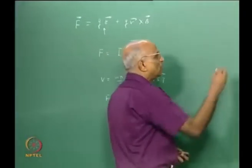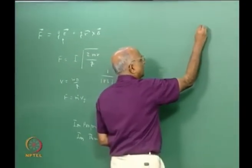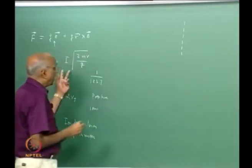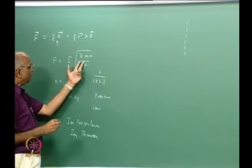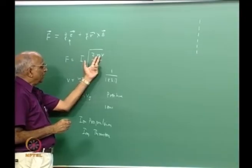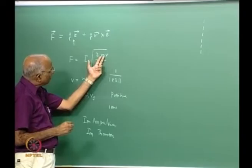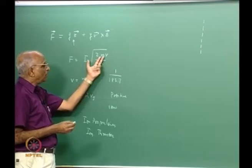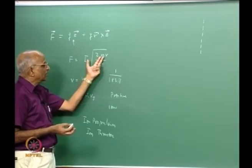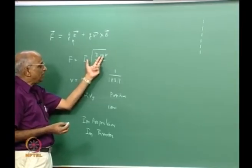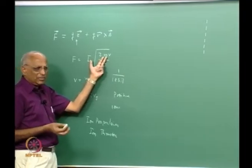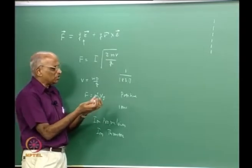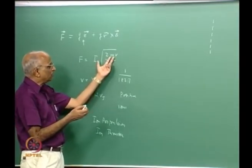Having said that, we also went one step further and said if I have to use this electrostatic principle to generate an ion rocket using positive charges, we would also like substances whose molecular or atomic mass is larger. Therefore I would rather have heavy substances like mercury, caesium, or xenon. Mercury contaminates the surfaces of spacecraft.